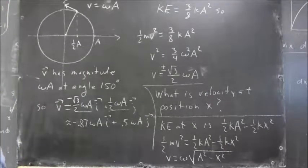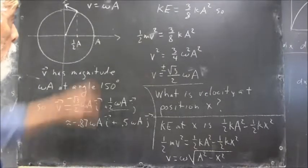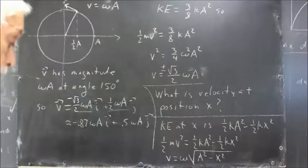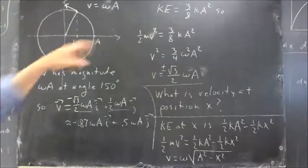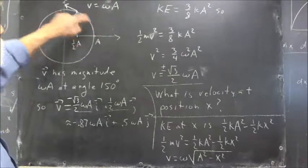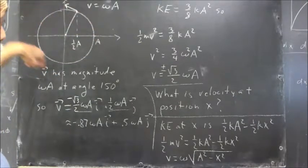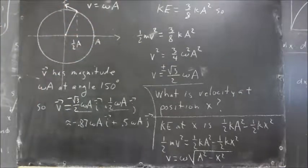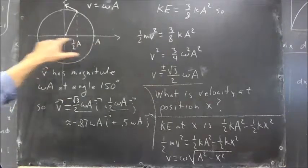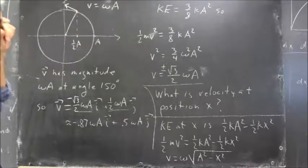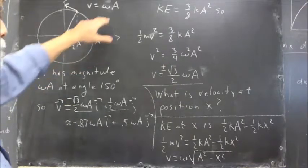One student gave the answer V equals omega A to the question. Now, V equals omega A is the velocity of the reference point on the reference circle. It's not the velocity of the oscillator, but it's closely related to the velocity of the oscillator.